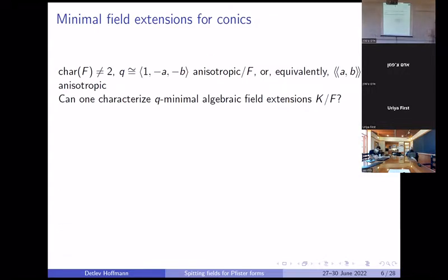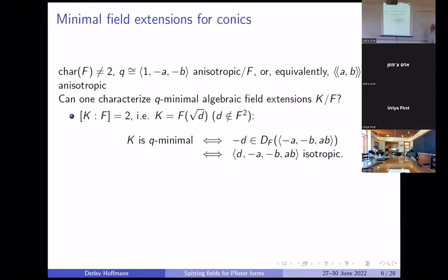Let's fix an anisotropic conic. It becomes a little more complicated. What are the Q-minimal algebraic field extensions, for example? If you fix the degree of the field extension, you can get a criterion in characteristic not two. For a quadratic field extension, you just ask whether this conic becomes isotropic or not — that's the only question. For odd extensions, you don't have to check anything.